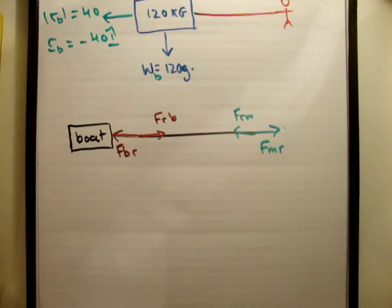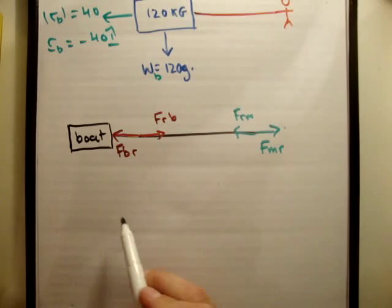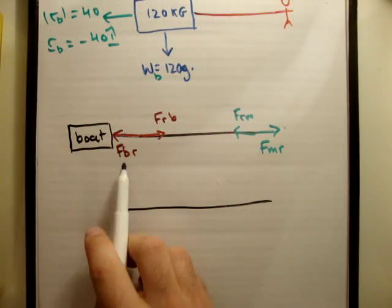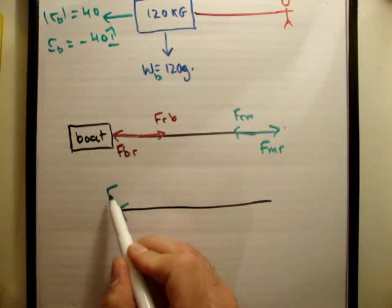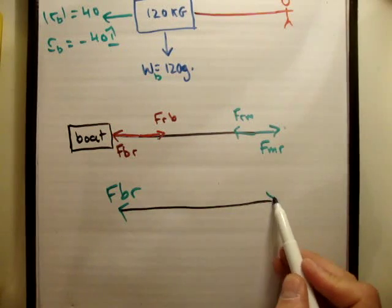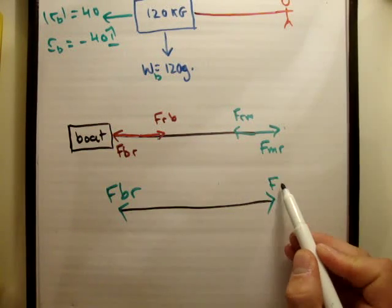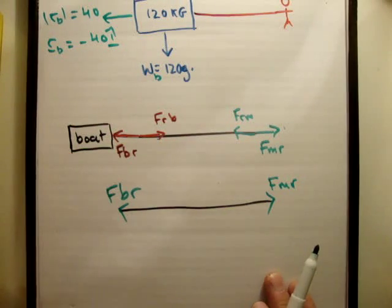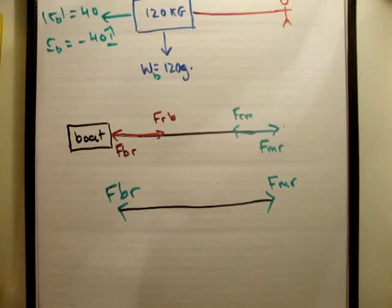The vectors acting on my rope are fbr, the force of the boat on the rope, and fmr, the force of the man on the rope. The question is, are these action-reaction pairs? Are they Newton's third law pairs?